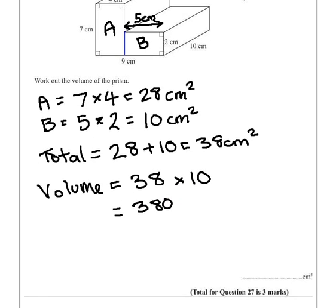Now if we look, our whole question is worth 3 marks. We're given the units. So we'll get 1 mark for finding our final answer, 1 mark for finding the area of the cross section, and 1 for multiplying it by the length. So even if you make a calculation error here and don't get 38 centimeters squared, you'll still get 2 out of the 3 marks.